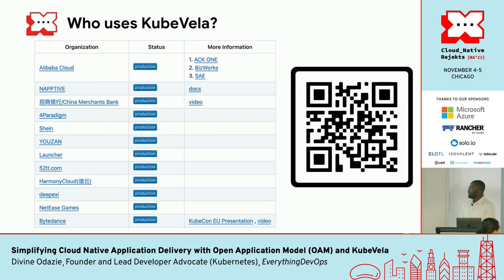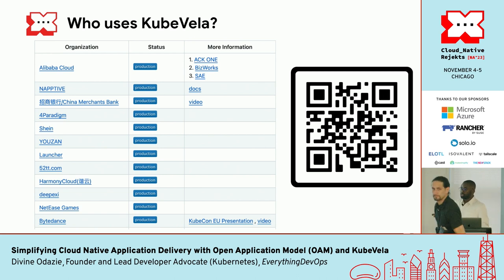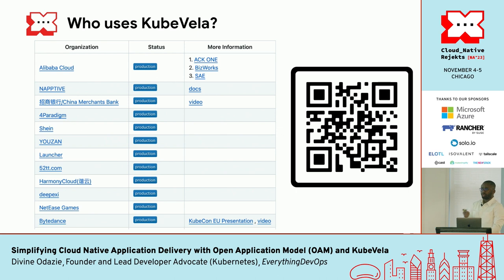Who uses KubeVela? KubeVela is mostly used by companies out of Asia because it was created in collaboration between Microsoft and Alibaba. Alibaba uses KubeVela, and a really notable user is ByteDance — the creator of TikTok. They use KubeVela, and Shein also uses it in production, with documentation on how they use it. You can scan the QR code to learn more. Another company advocating for KubeVela and building around it is Naptive, a company out of Spain, who gave a talk at KubeCon EU earlier this year.